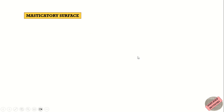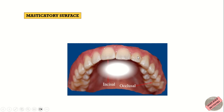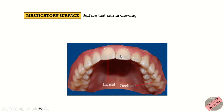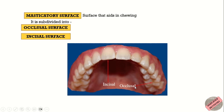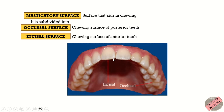The last surface is the masticatory surface, which aids in chewing and is divided into the occlusal surface and the incisal surface. The chewing surface of posterior teeth is known as the occlusal surface, whereas the chewing surface of anterior teeth is known as the incisal surface. So this was all about the surfaces of a tooth. Now let's move back to the GV Black's classification.